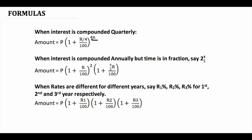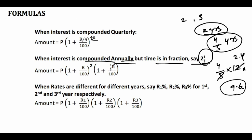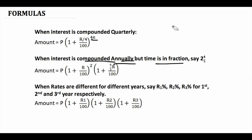Another situation is when interest is compounded annually but the time period is in a fraction, say two and four-fifths years. Two years are complete and four-fifths is part of one year. Four-fifths of a year is 9.6 months, but we cannot use fractions or decimals conveniently. So we separate the two years and handle four-fifths separately by multiplying r by four-fifths and keeping the time period as one.